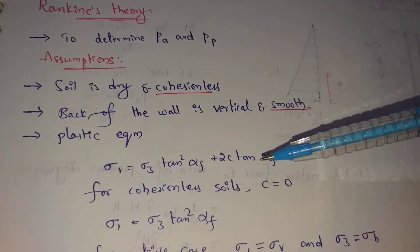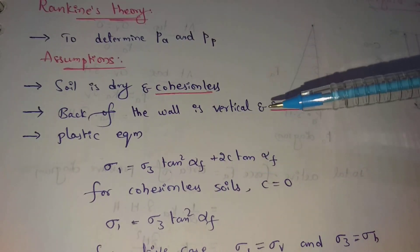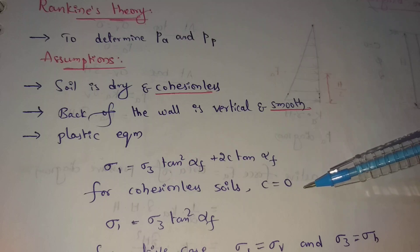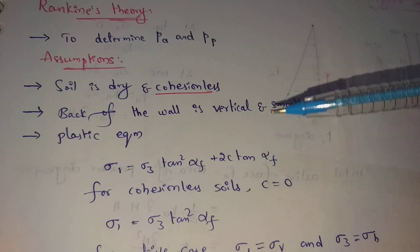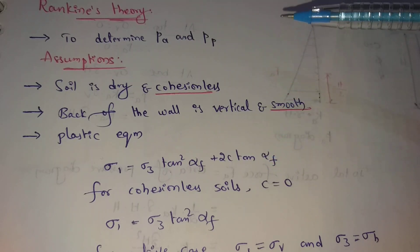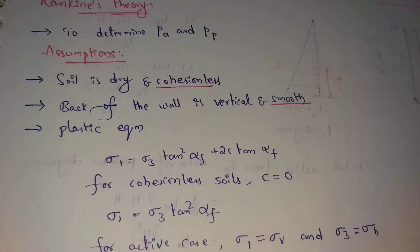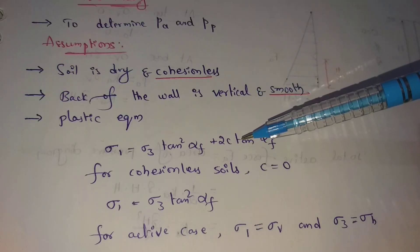C equals the cohesion value, and alpha-f means the failure angle. For cohesionless soils — cohesionless means cohesion value is zero — examples are gravel and sand. So c equals zero.